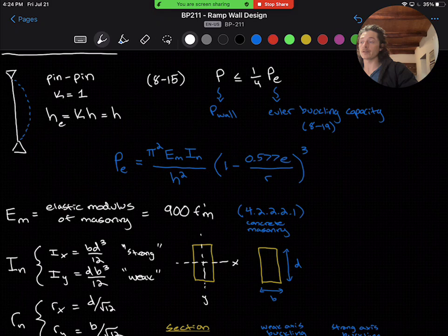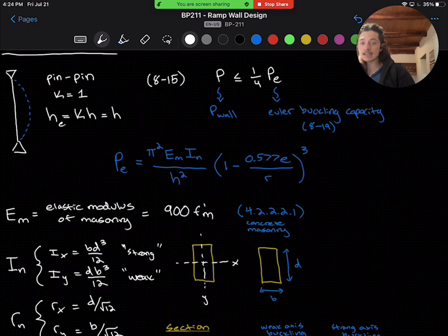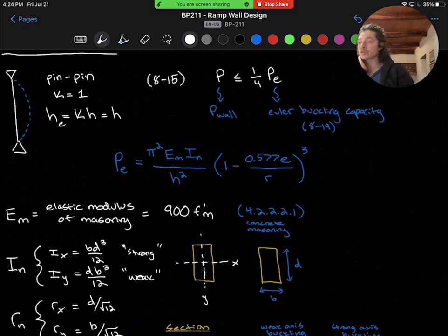IN, as I discussed a bit before, is the moment of inertia, the second moment of inertia of the net cross-sectional area. IN for a rectangular cross-section, in this case, is going to be BD cubed over 12. And we'll calculate two of these, one for each axis, so IX and IY. IX will be the strong axis moment of inertia, and IY will be the weak axis moment of inertia.